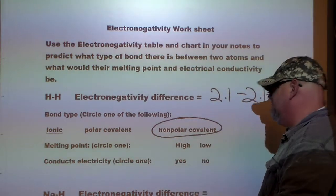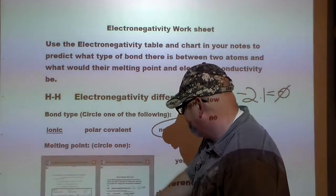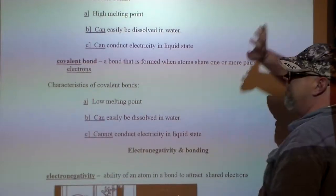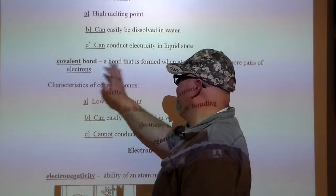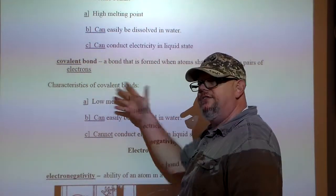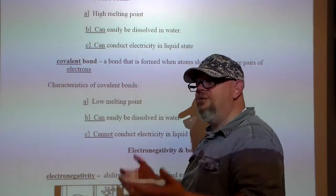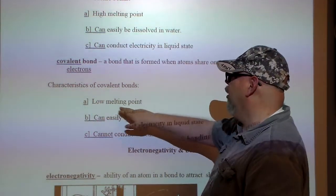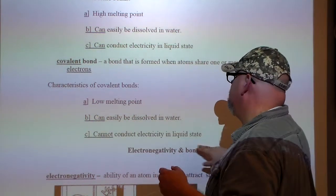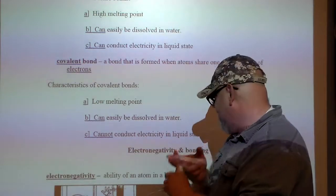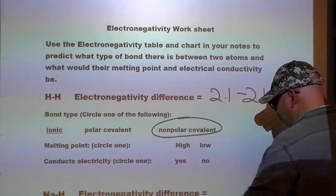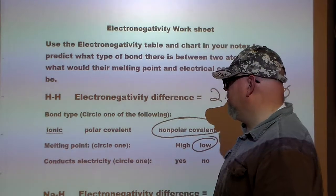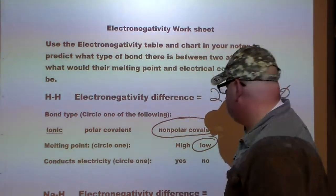What about the melting point and conducting electricity? We know it's a covalent bond, so looking at the characteristics of covalent bonds — no difference between polar and nonpolar for general characteristics — it has a low melting point and cannot conduct electricity. So on the worksheet, circle low melting point, and for conducting electricity, that's a no.